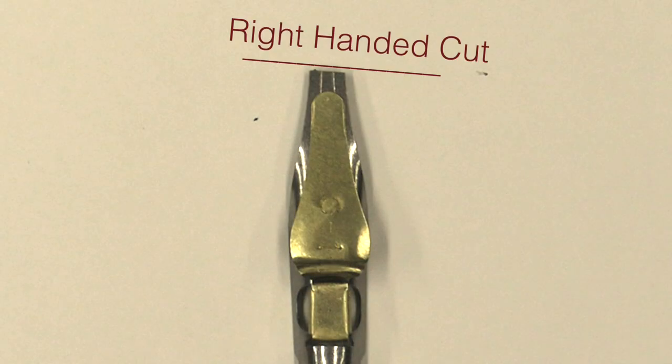The reservoir on the Speedball nib, although it resides at the top of the nib, is unlike the reservoirs on the Brause or Tape in that you can't adjust it. It is where it is, and it stays put. Usually, it works quite well. We'll have a discussion about that later.